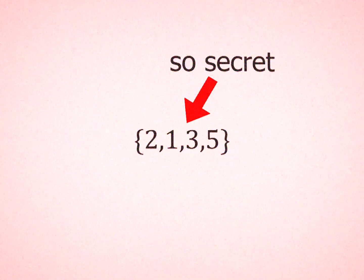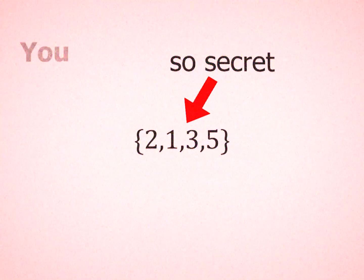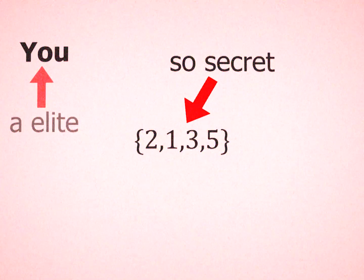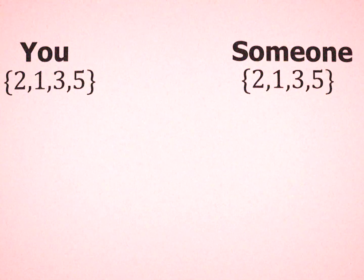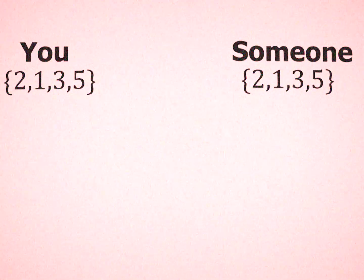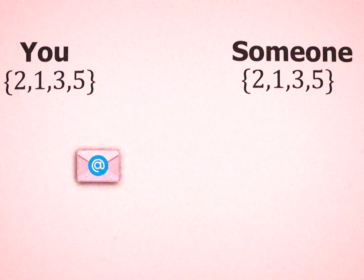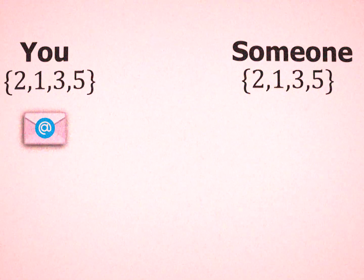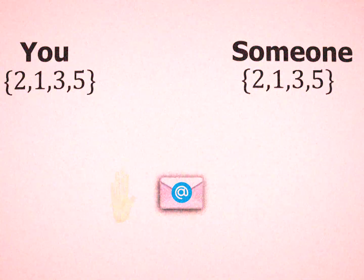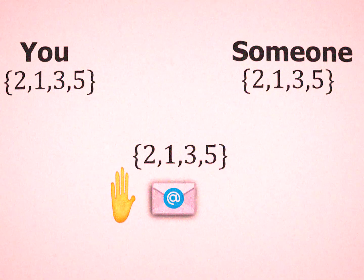To understand what those functions are, check this set of numbers. These numbers are so secret that only people with elite knowledge have these numbers. Now assume someone else claims that they have these numbers and they want to tell you that they have this number. How can they tell you that if they are not with you? If they mail you or message you, the secrecy breaks because anyone, or at least the government, can see them.